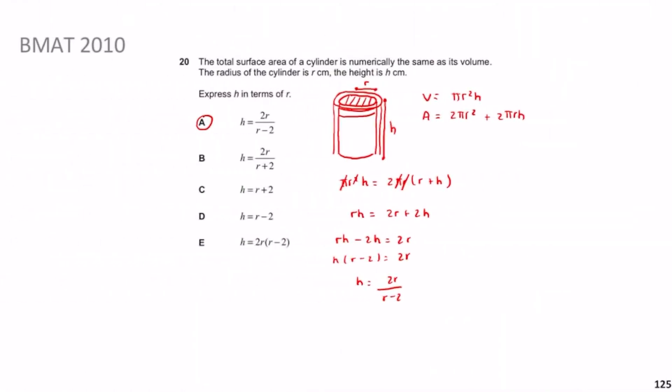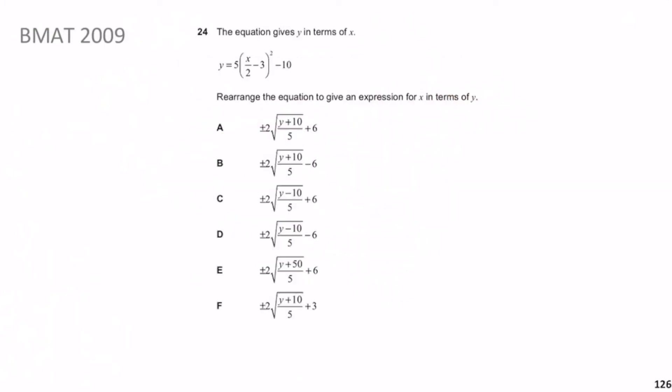Previously we looked at BMAT 2010 question 20 — really just testing rearranging equations and working out volumes and surface areas of prisms. Hopefully that all made sense. Now we move on to the last question of the algebra series: BMAT 2010 question 24. It says rearrange the equation to give an expression for x in terms of y — good revision of this common topic. Give yourself a minute.